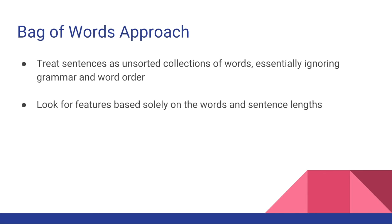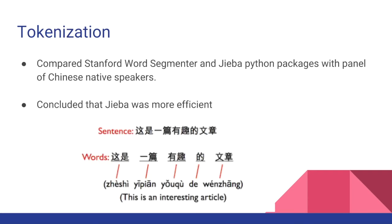I'll then look for features based solely on the words and sentence links. But, as per usual, there's a catch. Tokenization — splitting the words — is easy in many languages like English, but actually a big issue in Chinese and Arabic, where all the characters are run together with no spaces in between them. So the first step is to segment the words. There are a handful of packages to accomplish this, but none of them are perfect, which will contribute to some error later on.